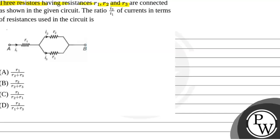resistances R1, R2 and R3 are connected as shown in the given circuit. The ratio I3 to I1 of current in terms of resistances used in this circuit is.